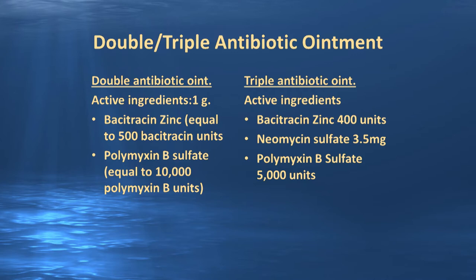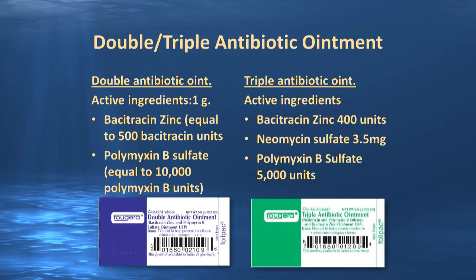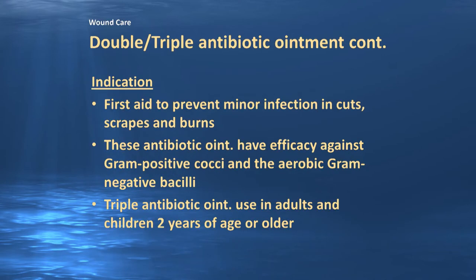Now for double and triple antibiotic ointments — you may have both or just one in your cache. Double antibiotic ointment has two components: bacitracin zinc and polymyxin B sulfate. Triple antibiotic ointment adds neomycin sulfate to those two components. These ointments are generally used as first aid to prevent minor infection in cuts, scrapes, and burns, with efficacy against gram-positive cocci and aerobic gram-negative bacilli. We generally save triple antibiotic ointment for use in adults and children over the age of two.